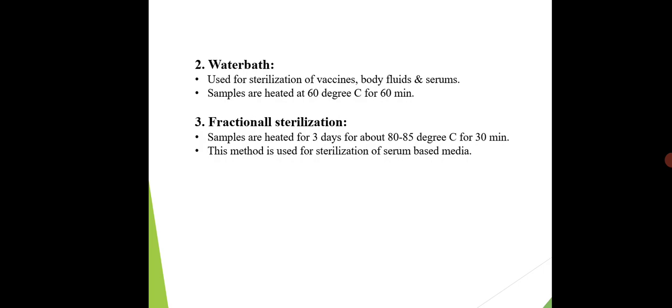Second method under below 100°C is water bath. Water bath is used for the sterilization of vaccines, body fluids, and serums. Samples are heated at 60°C for 60 minutes. In a water bath, we can sterilize vaccines, body fluids like CSF, and serums. The construction of a water bath is somewhat like a rectangular shape where water is boiled at a certain temperature and the equipment to be sterilized is kept inside.